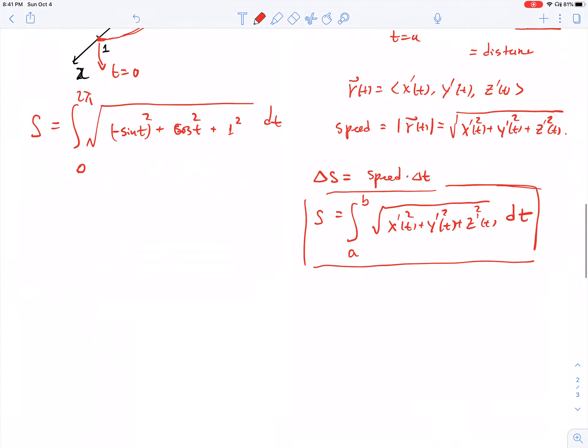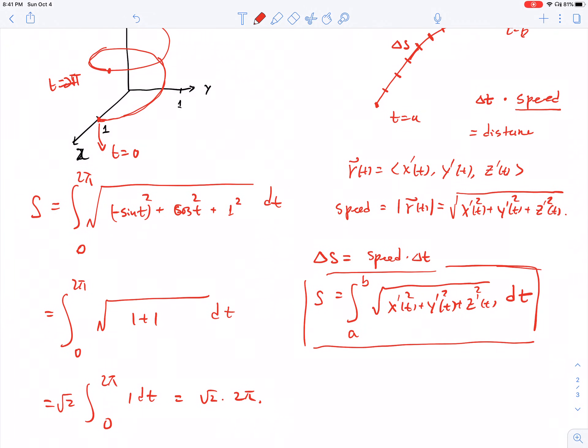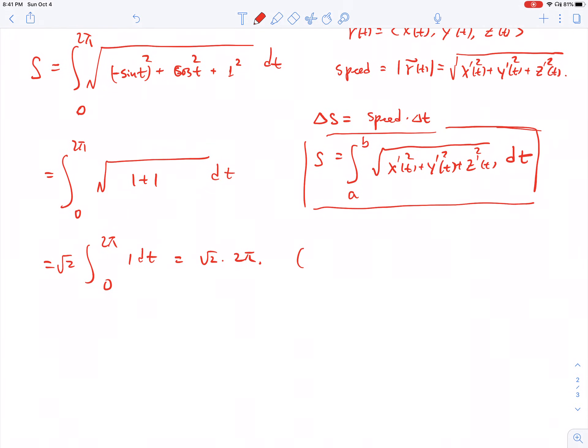We see how easy it is because sine squared plus cosine squared is exactly 1. We have 1 plus 1 is 2, so we have root 2 integrated from 0 to 2π, which is 1 dt. This is exactly root 2 times 2π. If you look at the projection of this helix onto the xy plane, you have a circle, so this one is way bigger than the circumference.